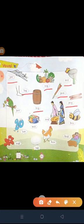P, E, T, pet. Pet means paltu. T, E, N, ten. Ten means das. W, E, T, wet. Wet means geela.